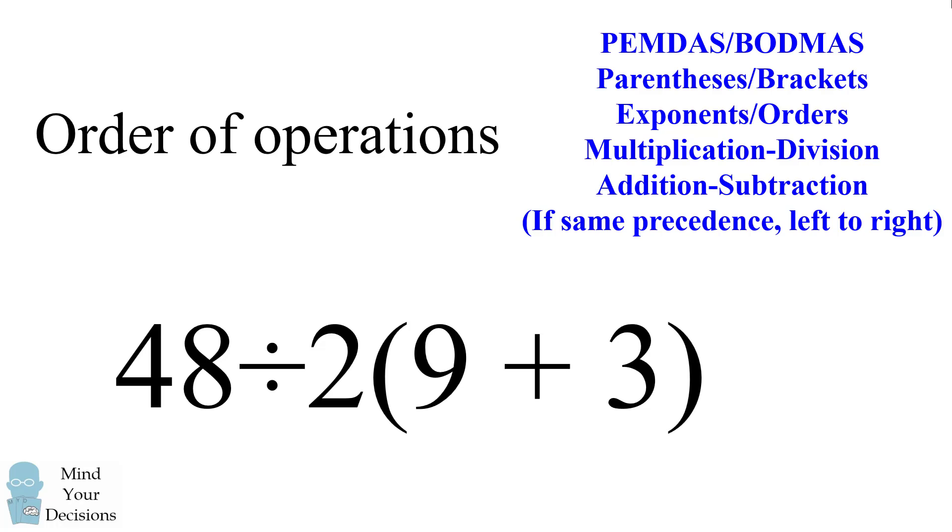The first part of this expression has no controversy. There is a parenthetical expression that needs to get evaluated first. We have 9 plus 3 in parentheses. So we evaluate 9 plus 3 to get 12.